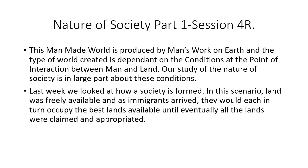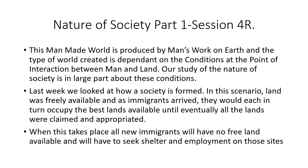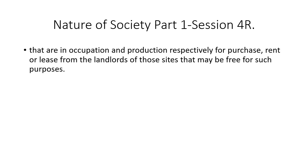Last week we looked at how a society is formed. In this scenario, land was freely available, and as immigrants arrived, they would each in turn occupy the best lands available until eventually all the lands were claimed and appropriated. When this takes place, all new immigrants will have no free land available and will have to seek shelter and employment on those sites that are in occupation and production respectively, for purchase, rent, or lease from the landlords of those sites.